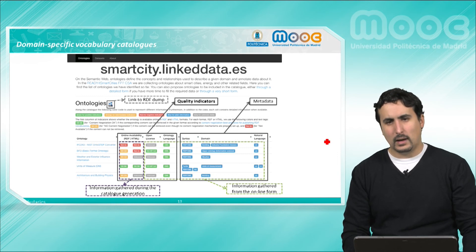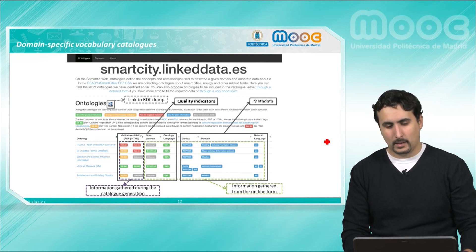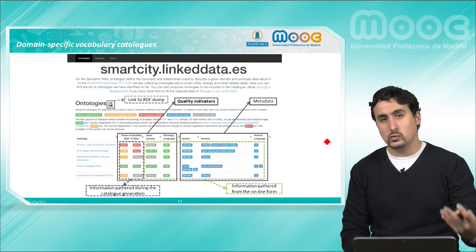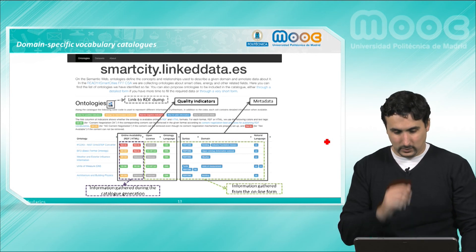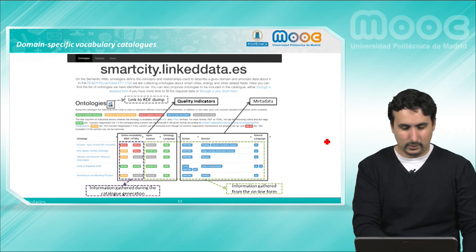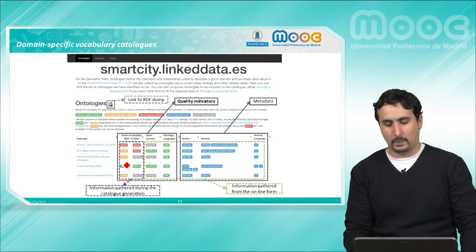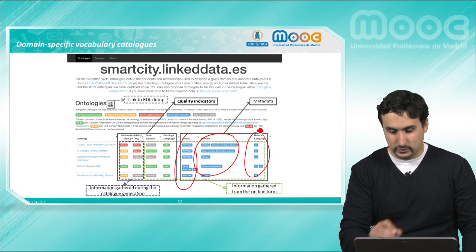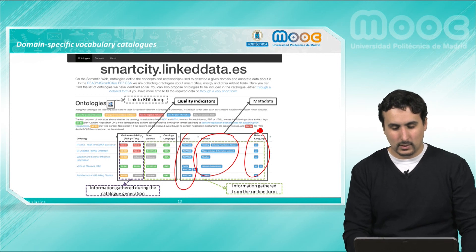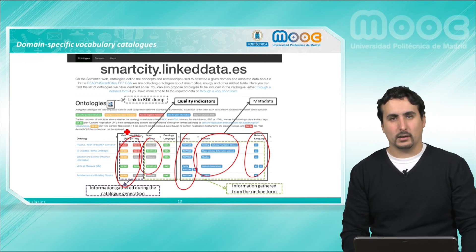We will also have domain-specific catalogs. For example, smartcity.linkdata.es refers to vocabularies and ontologies that describe information useful for the smart city context. So we will have ontologies for buildings, for weather, for unit of measurement, architecture and building physics, and others. For each one of them, we will have the domain, the syntax, the language, the natural language used for documentation, the license, and the availability of RDF or HTML representation.